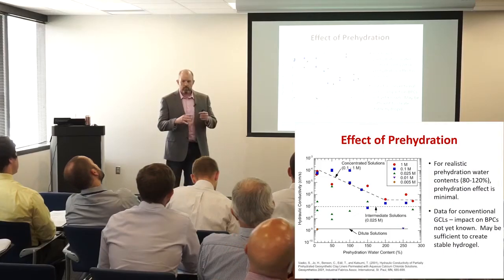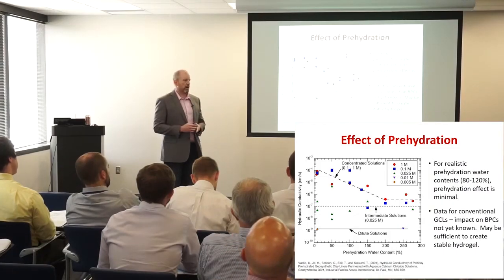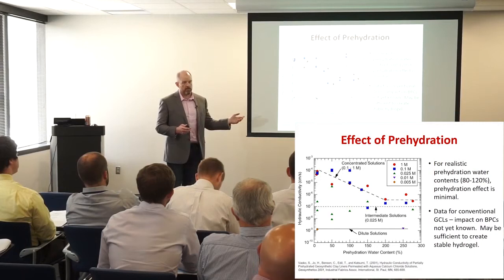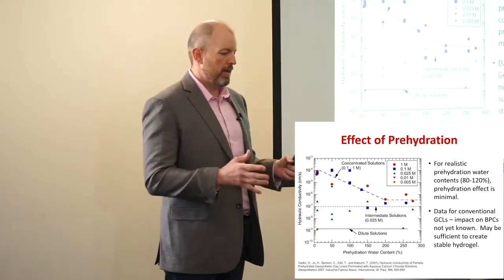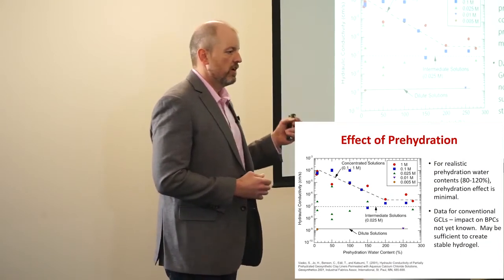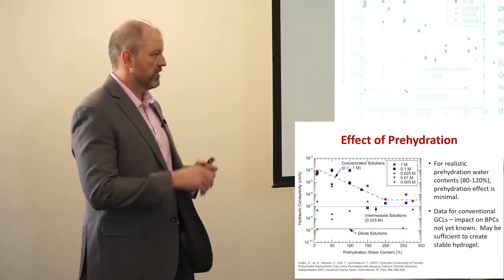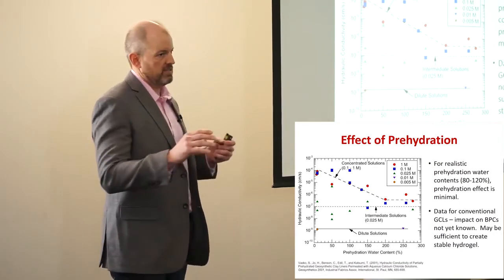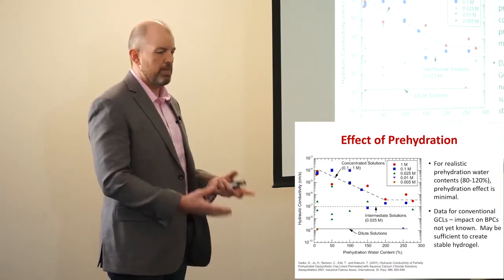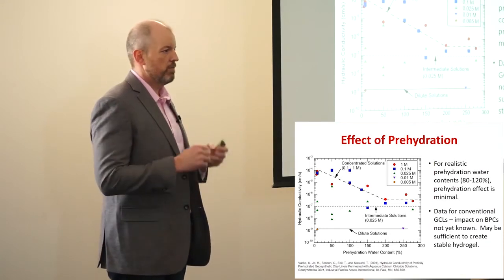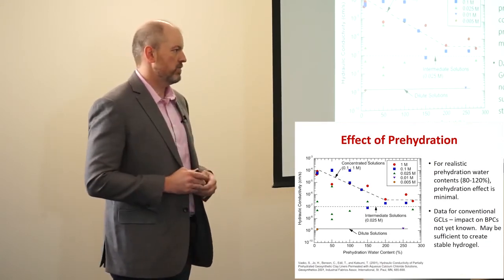When setting up these long-term tests, we consider how specimens get hydrated. We know from the literature that bentonite picks up moisture from the subgrade soil, changing from a granular dry structure into a gel. The bentonite polymer composite does the same thing — it picks up moisture during construction underneath the liner and forms a gel.